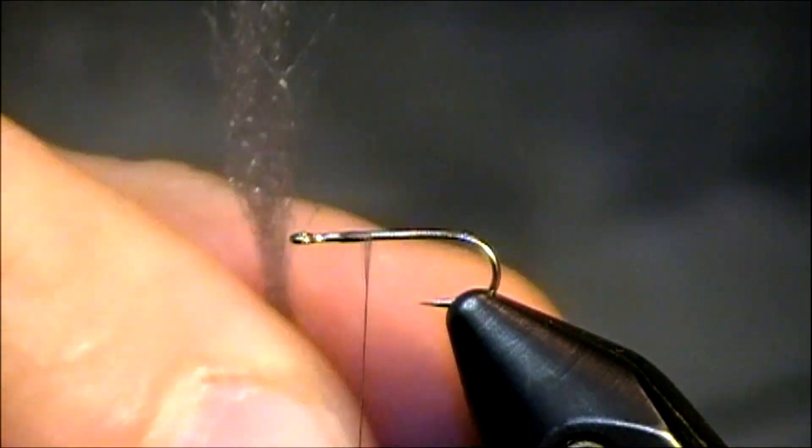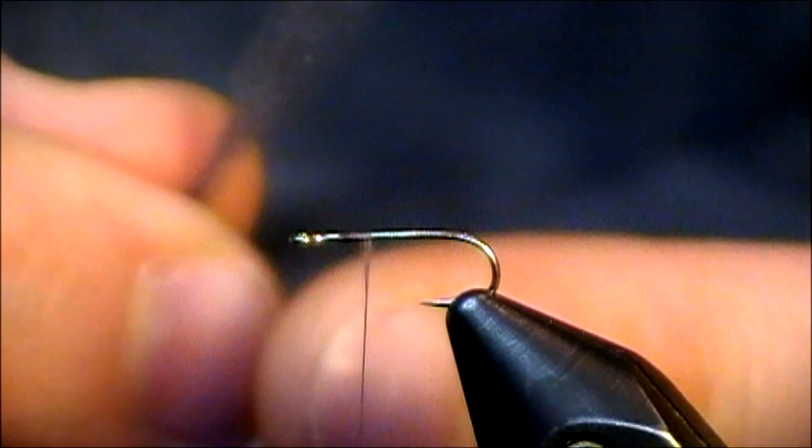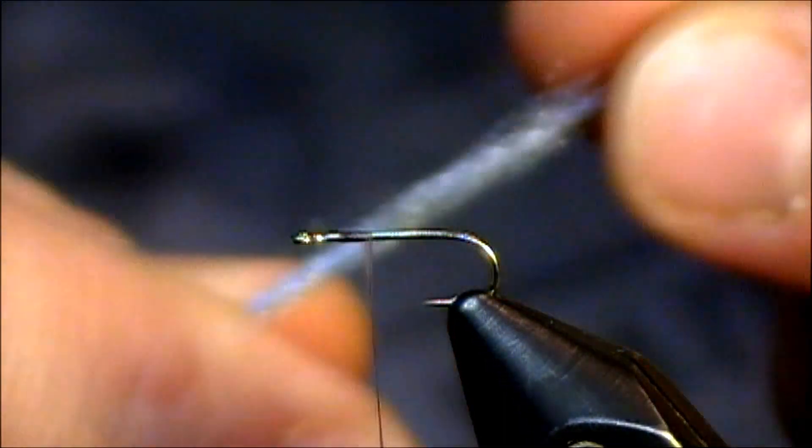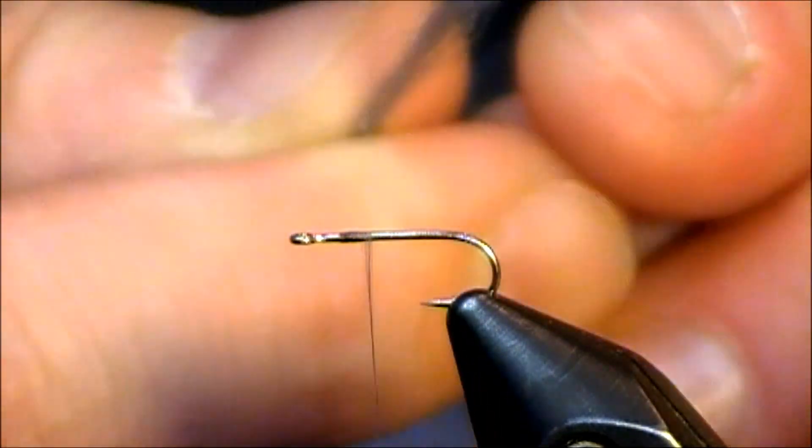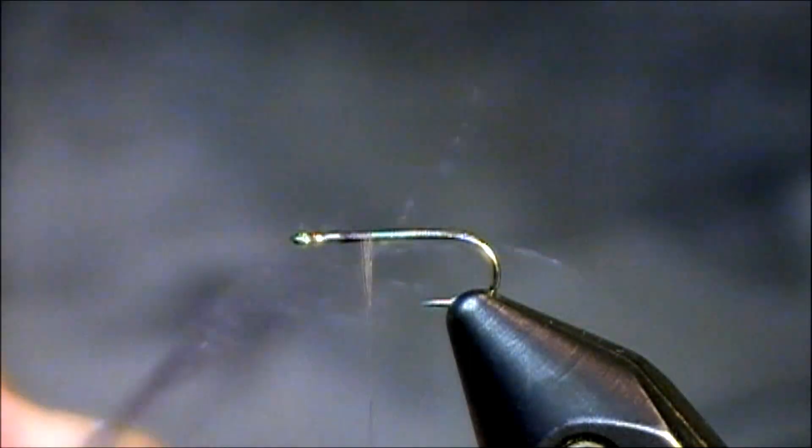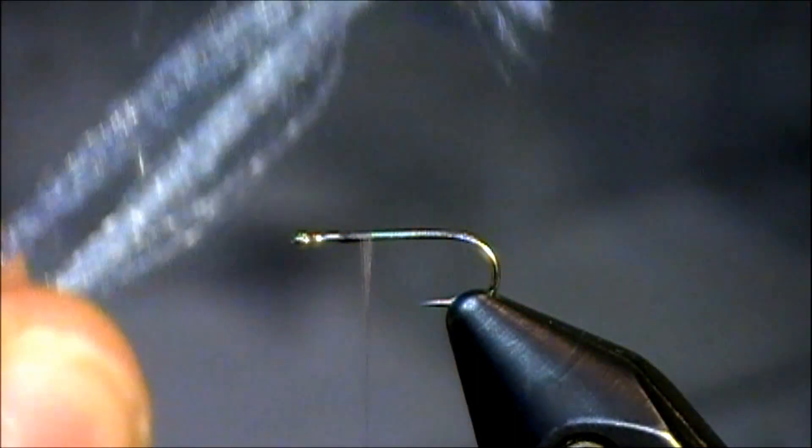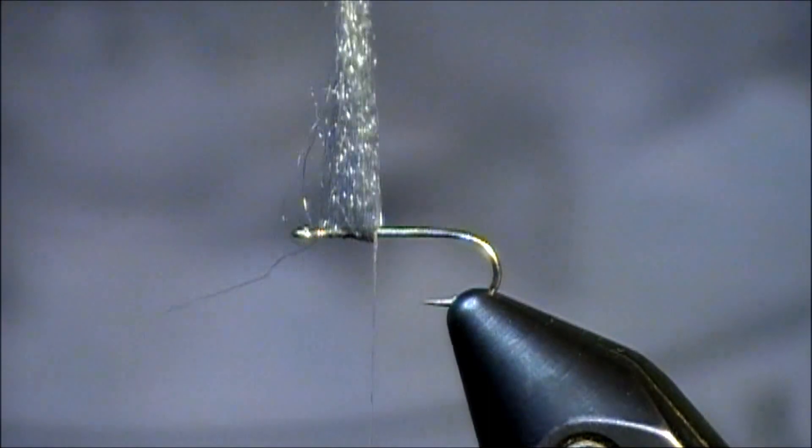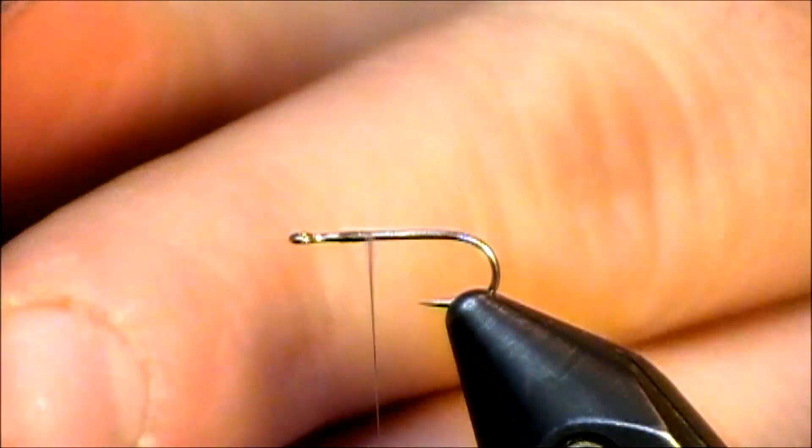To me whenever I use this Antron as a wing material, I typically will use high visibility colors and trim them down low. However, I do know a lot of fishermen who prefer to keep a really tall post to represent that wing of the mayfly. Whenever I initially cut Antron, the first thing I'll do is just hold it up against my hook and see if I have too much there because I like to double the Antron over.